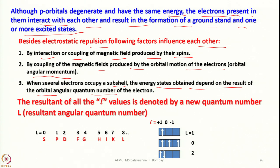The resultant of all the individual l values is denoted by a new quantum number called the resultant angular quantum number, represented by capital L. L can take values 0, 1, 2, 3, 4, 5, 6, 7 corresponding to terms S, P, D, F, G, H, I, K respectively. For example, if one electron is in a P orbital, L = 1; if three electrons are present, L = 0; if two electrons are paired, L = 2.